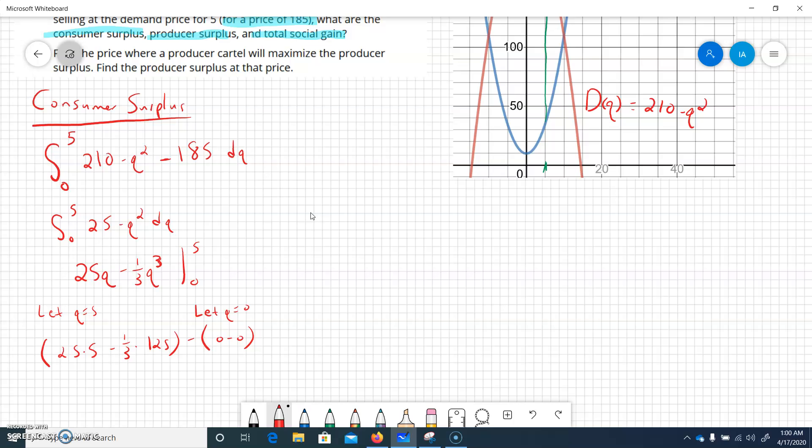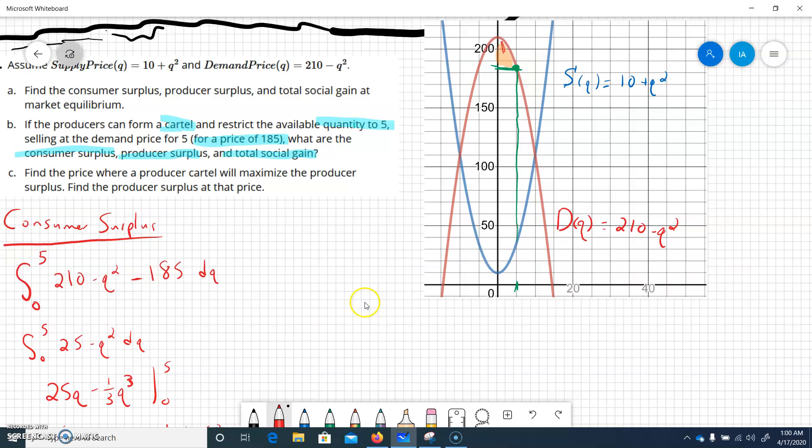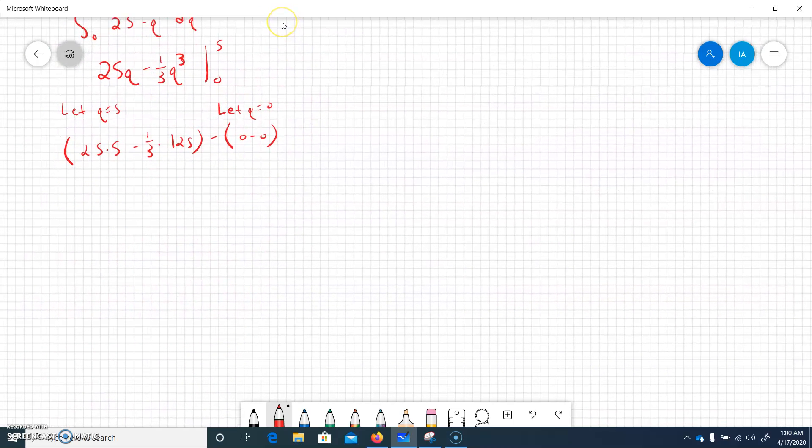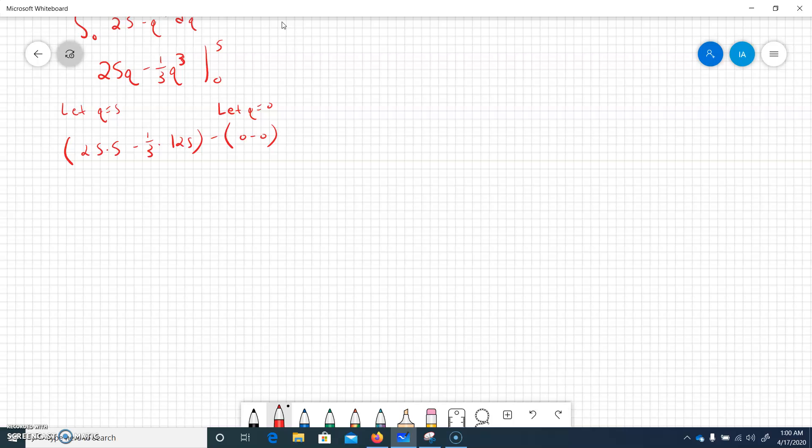Which will be 25 times 5 minus 1/3, and 5 cubed is 125, and then we'll subtract off the under part, which we will let q equal 0. So this will give us 0 minus 0. Now keep in mind I combined these two constants, 210 minus 185.